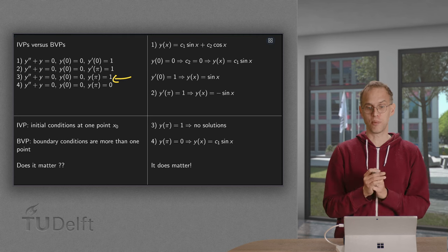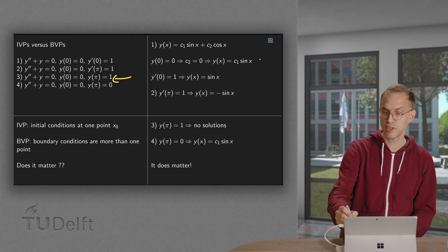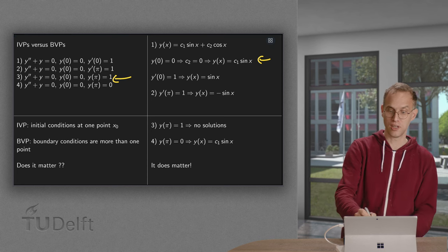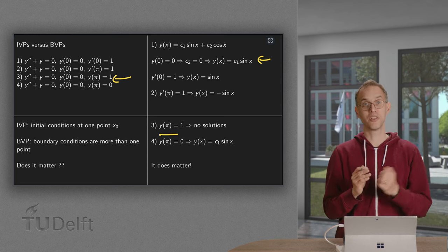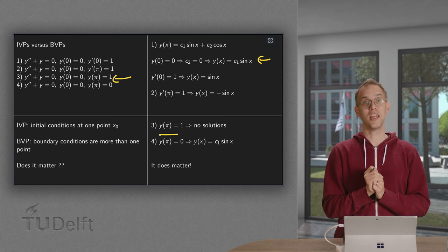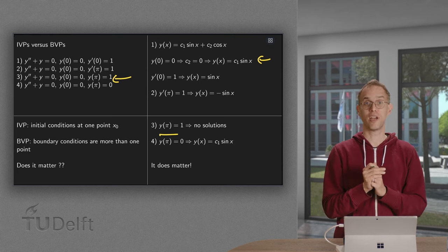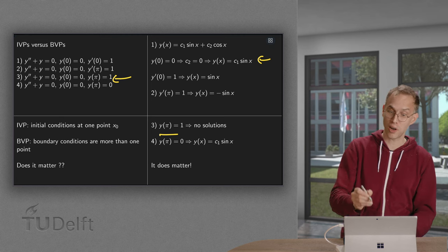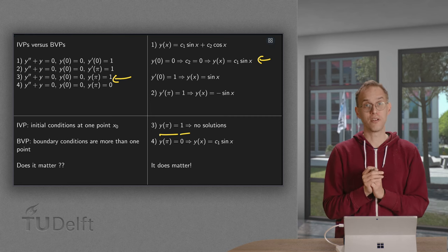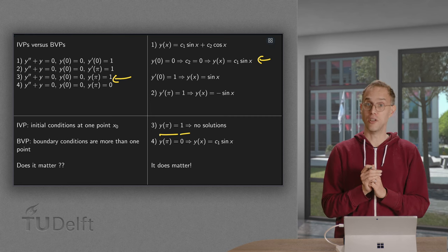Again, the first part is the same. So we find y of x equals c1 times sine of x. And now we try to impose the second condition. y of pi equals c1 times the sine of pi equals zero. So regardless of what we take for c1, we will always find y of pi equals zero. So we can never satisfy the other condition, y of pi equals 1. So in this case we find no solutions.